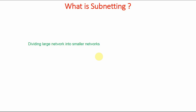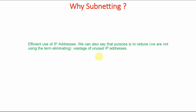So with subnetting, what we do is divide a large network into small networks. The first and most important purpose is the efficient use of your IP addresses. We can say the purpose is to reduce wastage of unused addresses. Please note we are not using the term 'eliminating' — when we do subnetting examples later, you will see that you cannot completely eliminate wastage of IP addresses. That is why we use the term 'efficient use' and say the purpose is to reduce wastage of unused IP addresses.